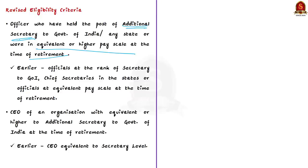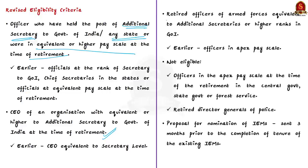Along with Additional Secretaries to the Government of India, Additional Secretaries of state governments are also now made eligible. Secondly, the Chief Executive Officer of an organization equivalent or higher to Additional Secretary at the time of retirement is also made eligible — earlier this was mandated only at the Secretary level. Third, regarding retired officers of armed forces: after the revised rules, officers equivalent to Additional Secretary or higher ranks in the Government of India are eligible, whereas earlier this was allowed only for officers in the apex pay scale.